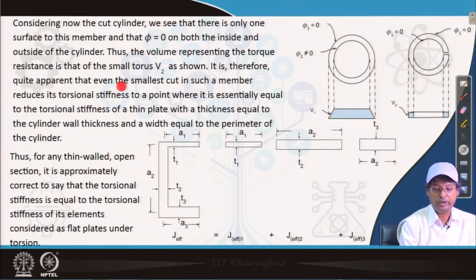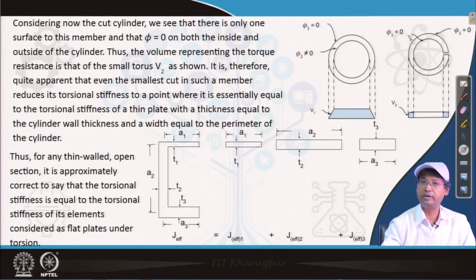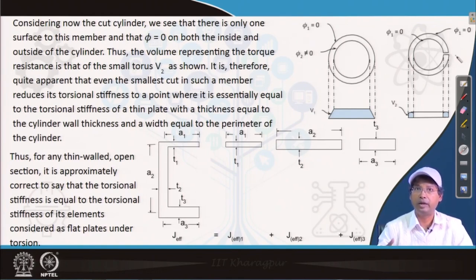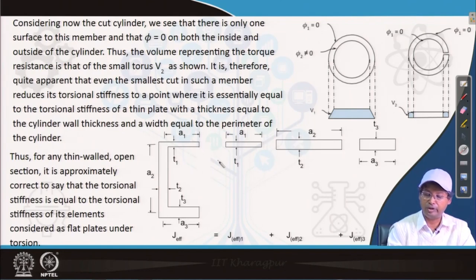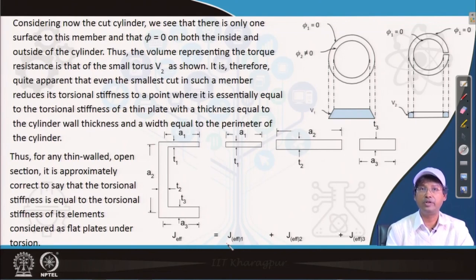Thus the volume representing the torque resistance is that of the small volume V₂, this volume covering this area. It is therefore quite apparent that even the smallest cut in such a member reduces its torsional stiffness to a point where it is essentially equal to the torsional stiffness of the thin plate with a thickness equal to the cylinder wall thickness and width equal to the perimeter of the cylinder. It is saying that if we stretch it, it is becoming almost a similar case, a thin wall section, and with that scenario the capability to resist torsion reduces in great way.